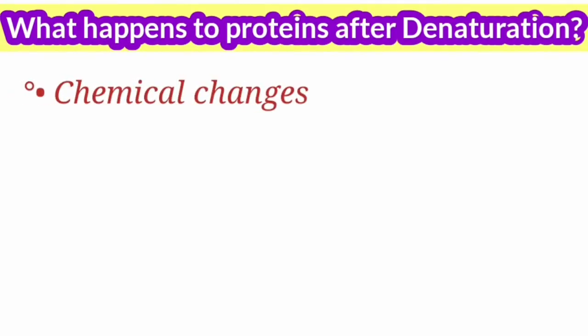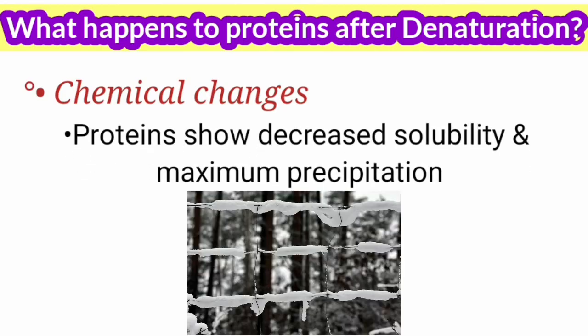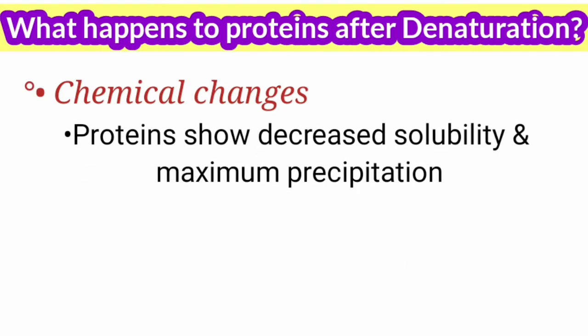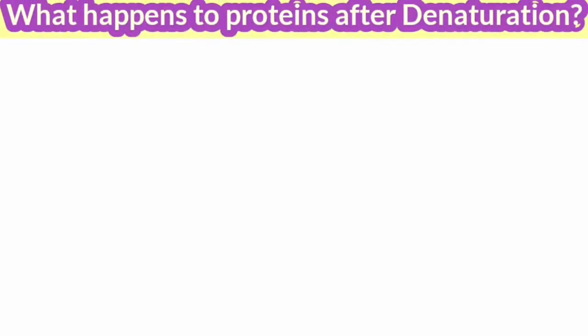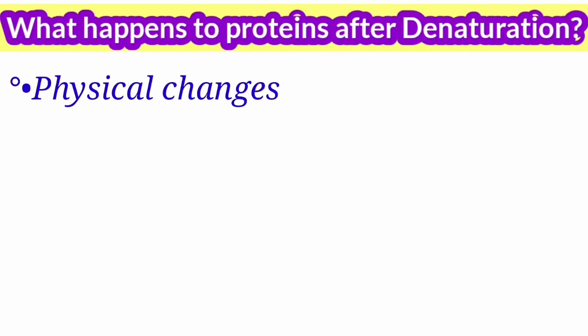Coming to chemical changes after denaturation, the proteins show decreased solubility and they show maximum precipitation. Many chemical groups become inactive, for example the sulfhydryl groups.